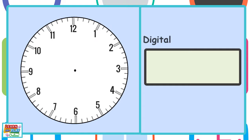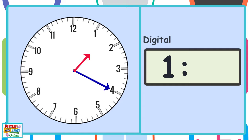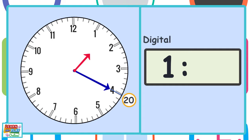Let's give this a go. First of all, we need to look at the hour hand. It has gone past the number 1, so it is 1 something. Now let's look at the minute hand — it is pointing at the line at the number 4. So let's count by 5s around the clock face until we reach the number 4 to find out how many minutes have passed the hour: 5, 10, 15, 20. So that means 20 minutes has passed the hour, and the time is 1:20.